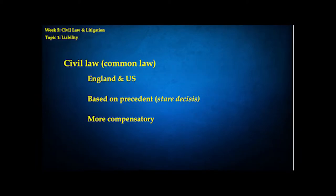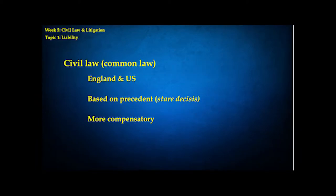In our last topic, we talked about criminal law. We have another system of law in America called civil law, also called common law. This is a system of law common to England and the U.S., sometimes referred to as private law because it depends on private individuals bringing cases to the court. In criminal law, it's formally the state versus the defendant — the government takes over the case on behalf of the victim. But in civil law, the case is person A versus person B, and it's the aggrieved party's responsibility to prosecute the case by privately hiring their own attorney.